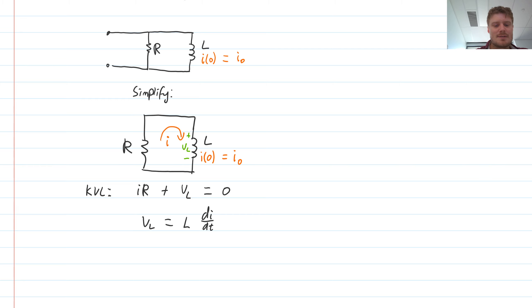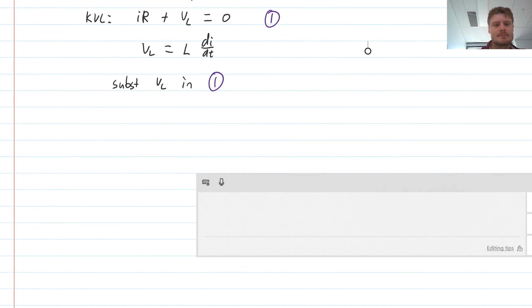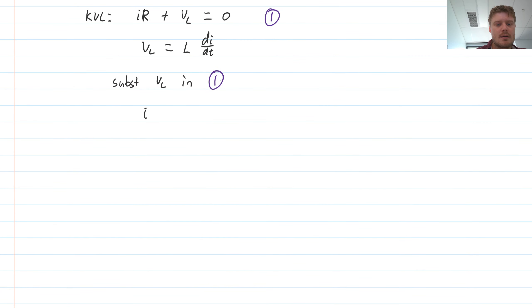So substitute VL in equation number, let's label this one here as equation number one. So substituting VL into there, then we will get I times R plus L di dt is equal to zero.